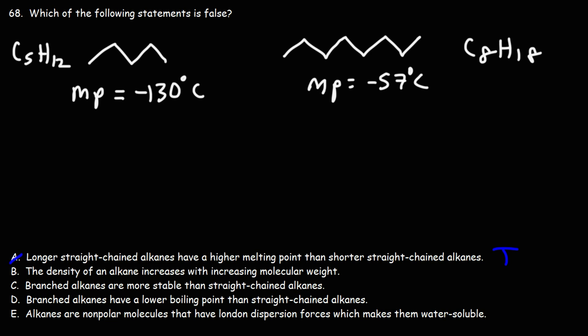What about B? The density of an alkane increases with increased molecular weight. With these two examples, we know that octane has a higher molecular weight than pentane. The density of pentane is 0.63 grams per milliliter. The density of octane is 0.70.